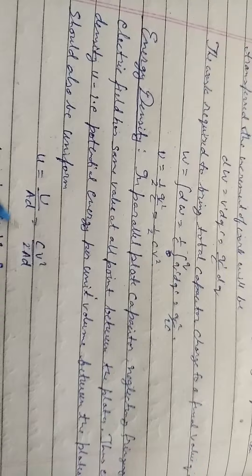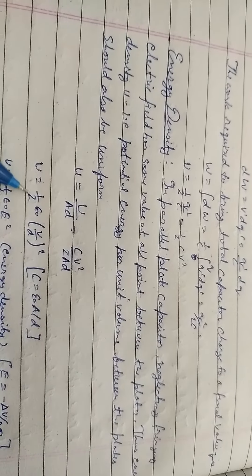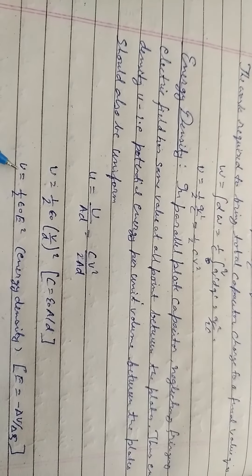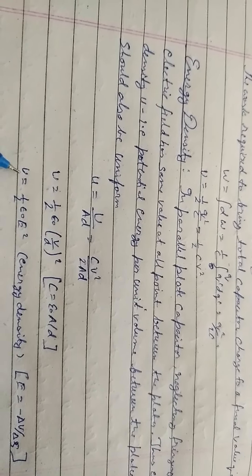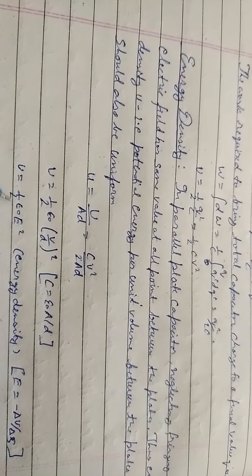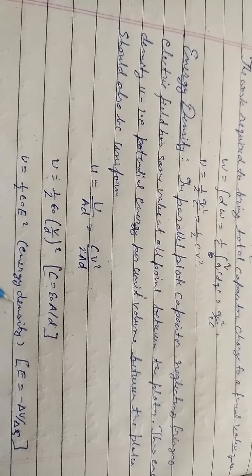U equals 1 by 2 epsilon naught V by D square, as C equals epsilon naught A by D. Potential energy density U equals 1 by 2 epsilon naught E square.